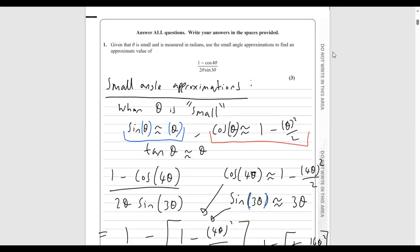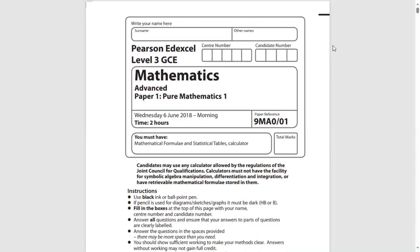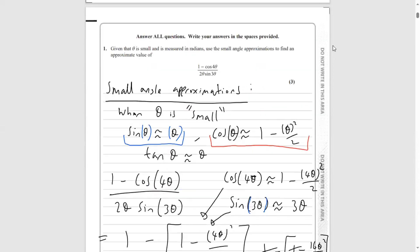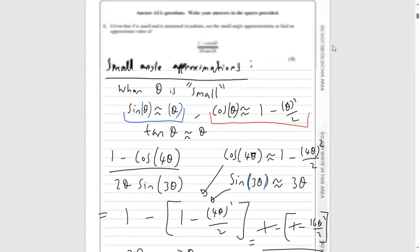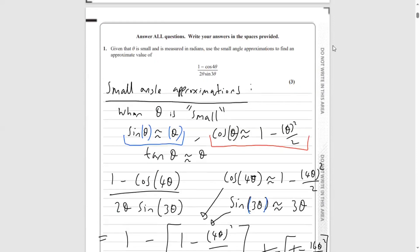Hi everyone. So yesterday I did a video on question 1 from the Edexcel 2018 paper 1 A-level exam. This question was on small angle approximations — we basically showed that (1 - cos 4θ) / (2θ · sin 3θ) was approximately equal to 4/3 for small angles of theta. I mentioned I was going to link proofs of how you prove these small angle approximations.